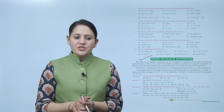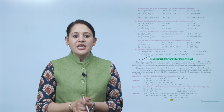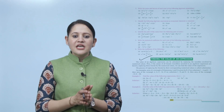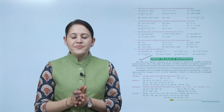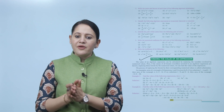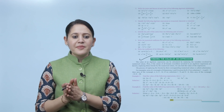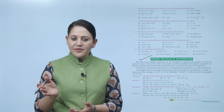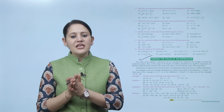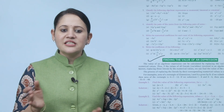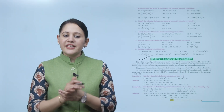This process of replacing the literals by their corresponding numerical value is called substitution. For example, the area of a rectangle with dimensions l and b is given by l × b. If we substitute l = 4 and b = 3, then the area is 4 × 3 = 12. If l = 8 and b = 6, then the area is 8 × 6 = 48.